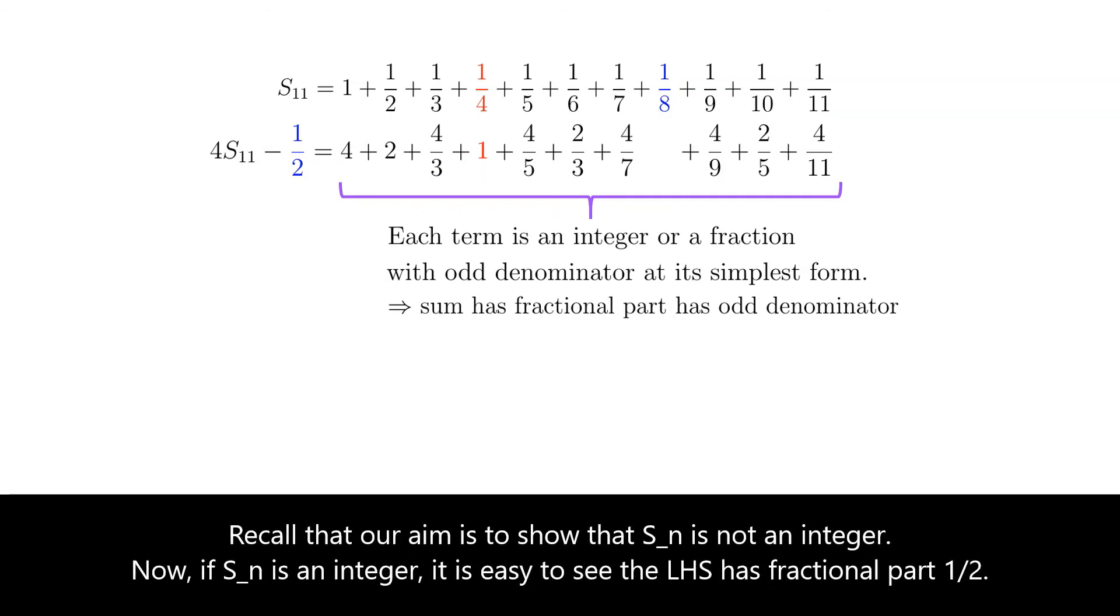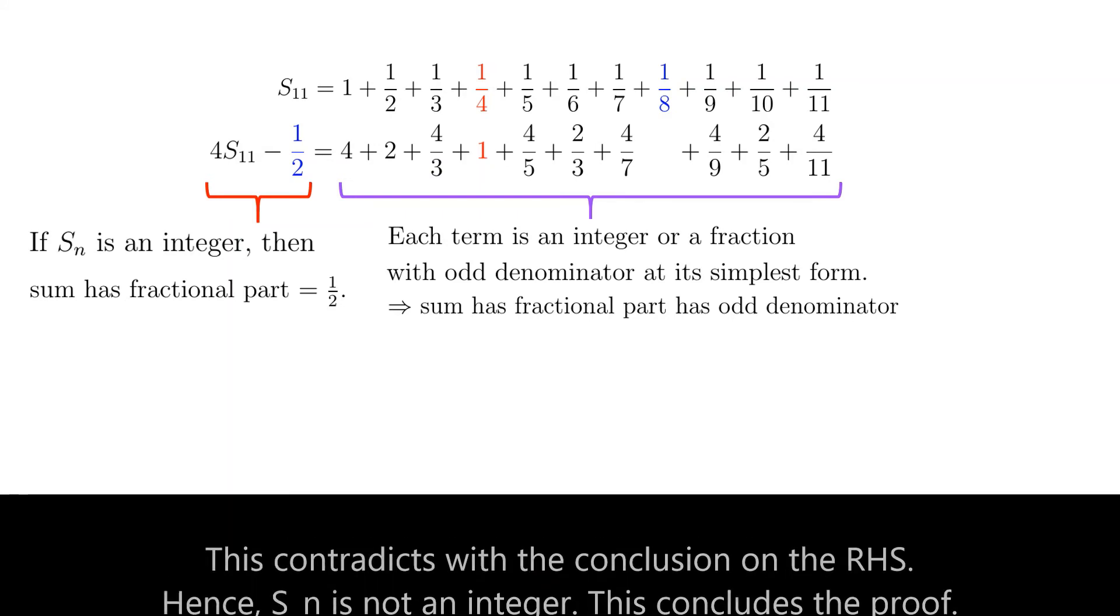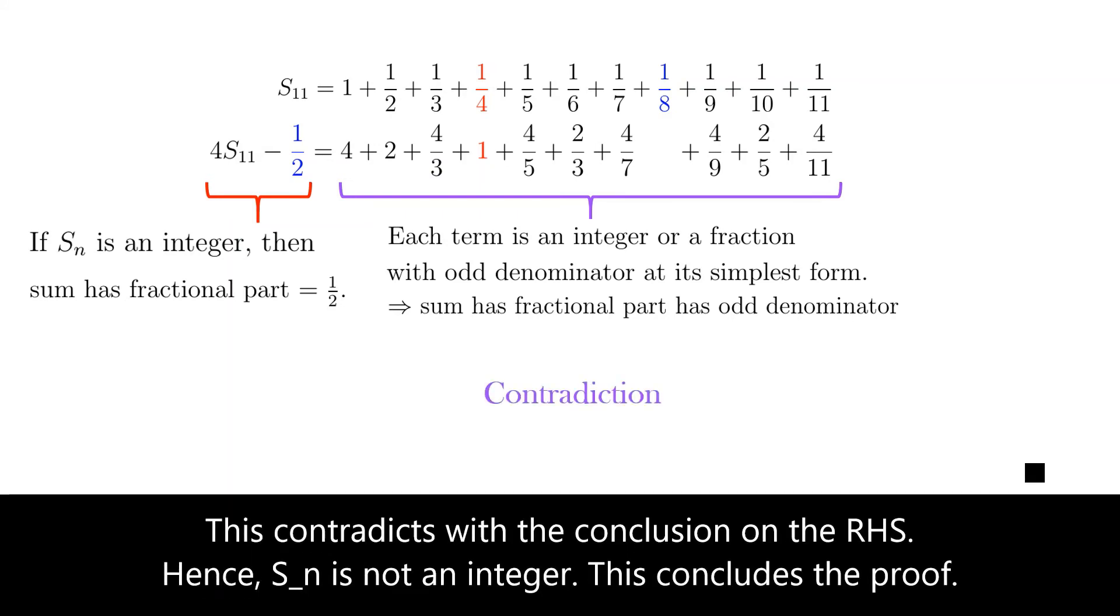Recall that our aim is to show S_n is not an integer. Now, if S_n is an integer, it's easy to see that the left-hand side has fractional part half. This contradicts with the conclusion on the right-hand side. Hence, S_n is not an integer. This concludes the proof.